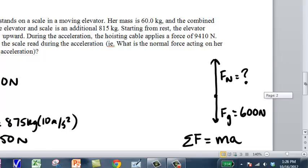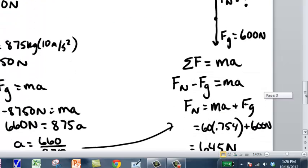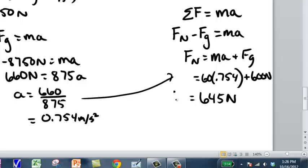So in the end, we check our sig figs. All of the things had three significant figures. So in the end, the scale would read or her normal force would be 645 newtons.